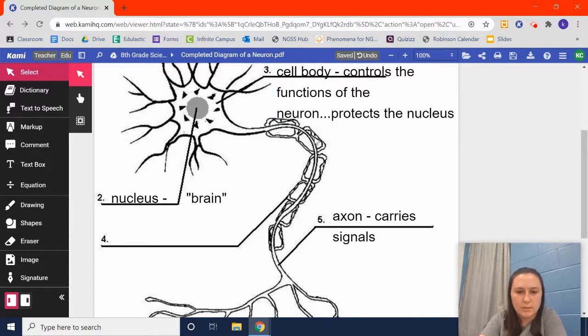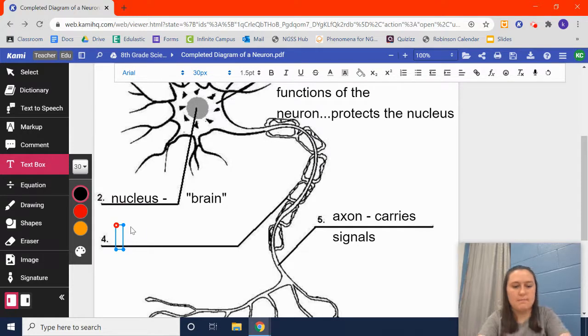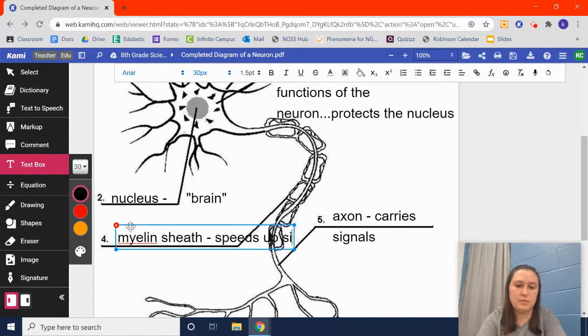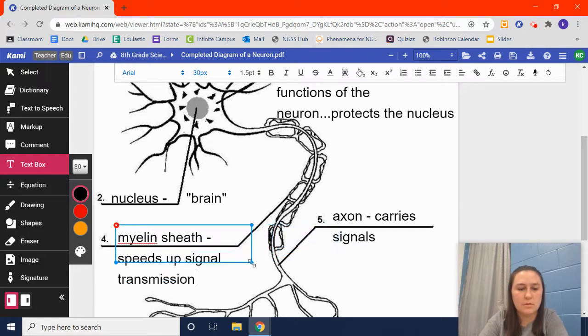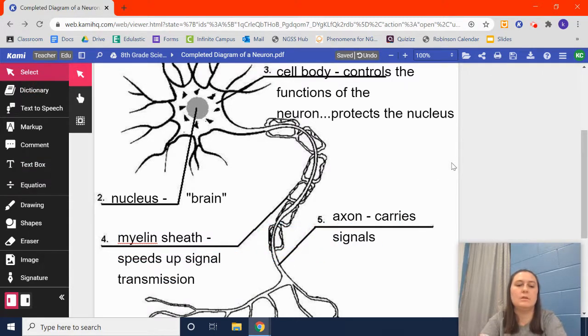These little rectangular bubbles here, which are number four, that helps speed up that electrical impulse. That signal that's moving from the dendrite, from the top of the neuron, all the way through the neuron. This is called the myelin sheath, and it speeds up the signal and transmission. That's really important because you want to move as quickly as possible. You want those electrical impulses to move through the neuron, so that way you can react appropriately.